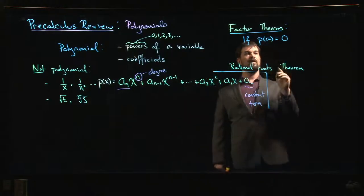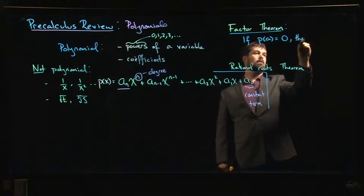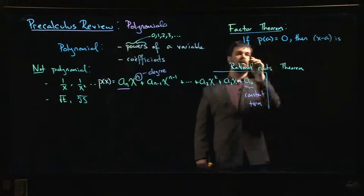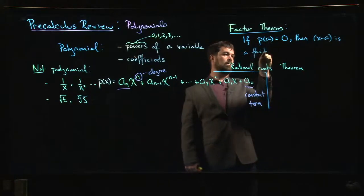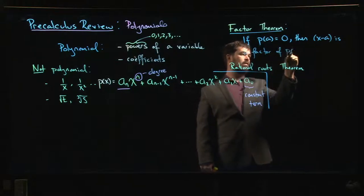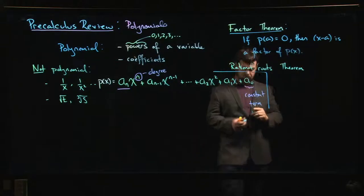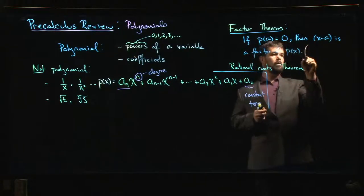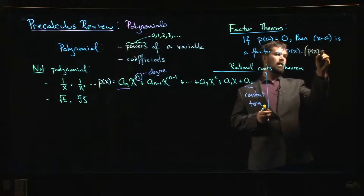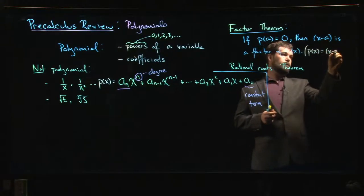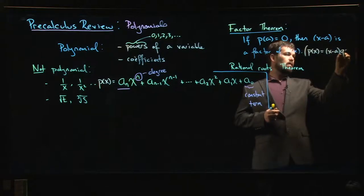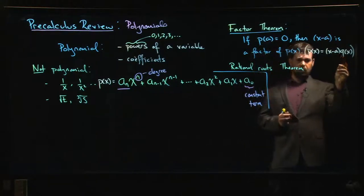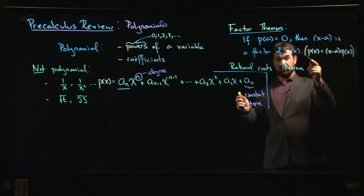If p(a) equals zero, then (x - a) is a factor of p(x). In other words, that means you can write p(x) as (x - a) times some other polynomial q(x). So q would be a polynomial whose degree is one less than the polynomial you started with.